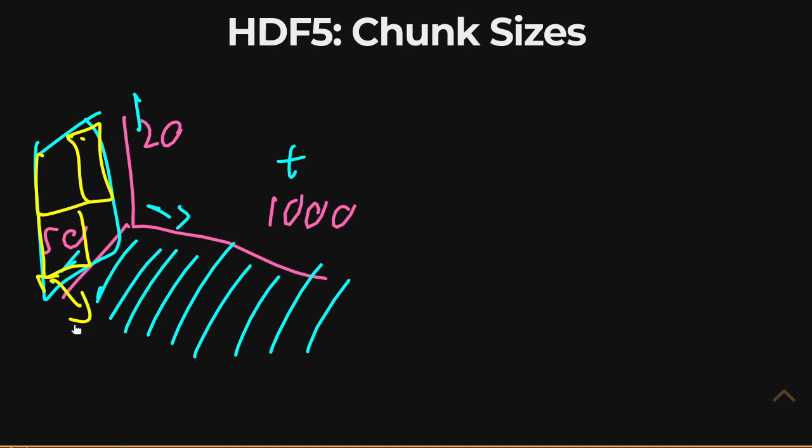A chunk size in this case, maybe around two or three frames. A chunk size in this case of 10 by—if this is axis one, two, three—a chunk shape of 10 by 25 by five could be an interesting and potentially very optimal-ish chunk size for this type of usage.